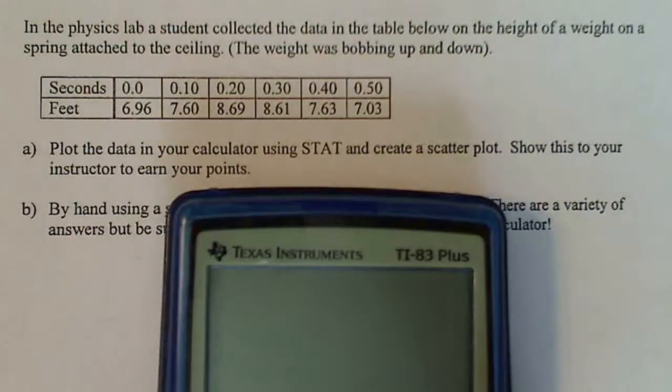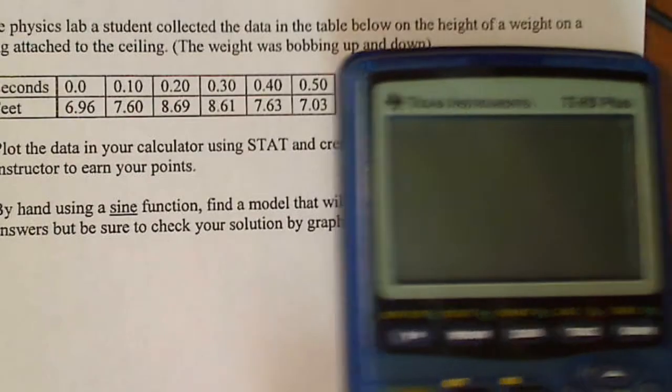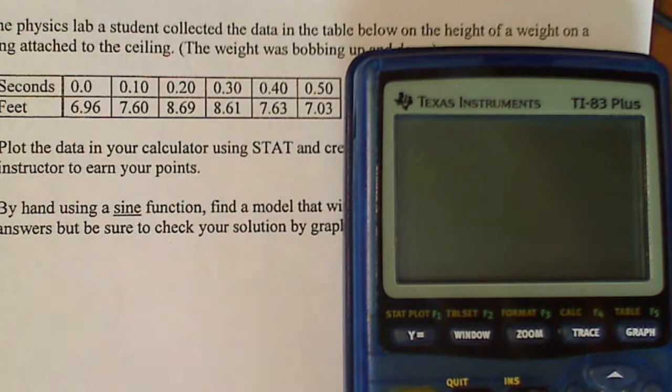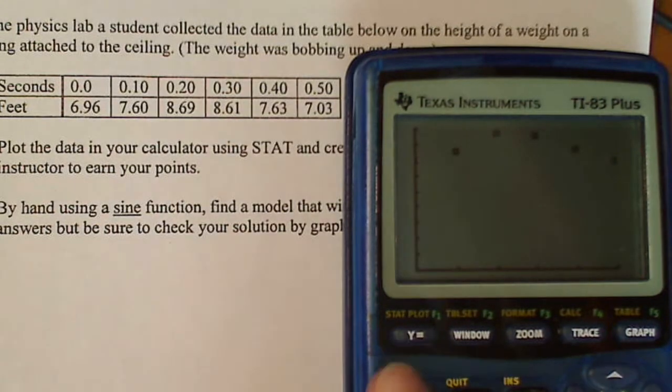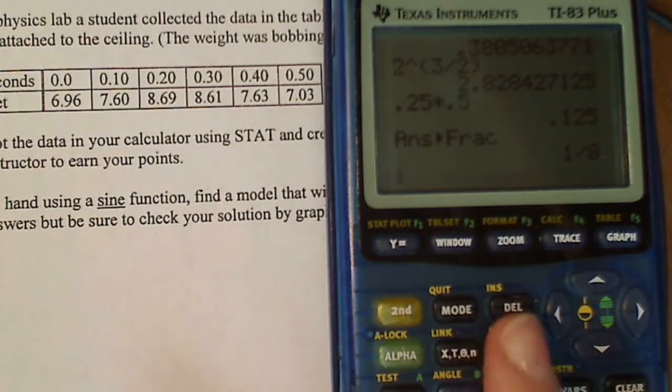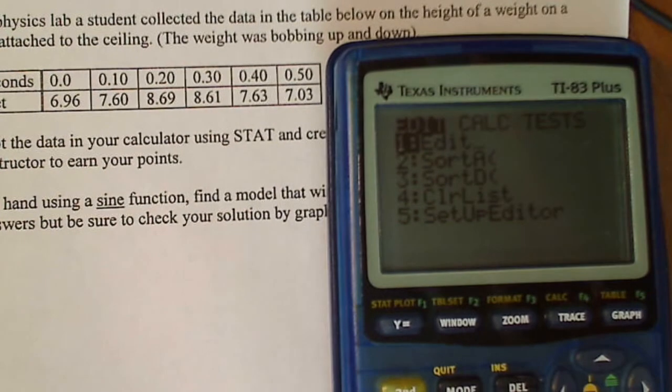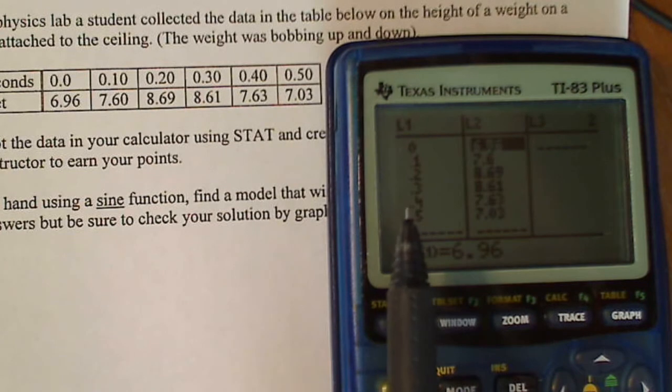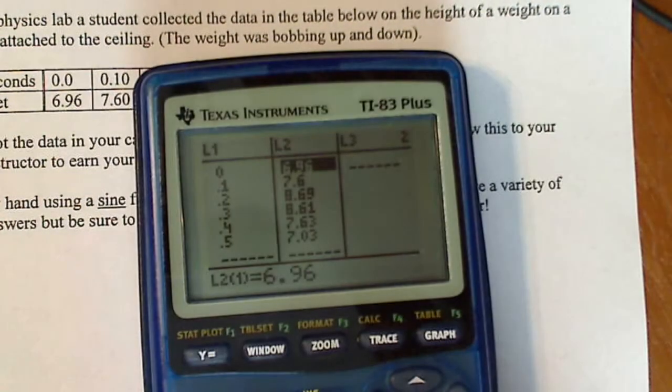But when you do your calculator, you just have to go to the stat. Let me move this so you can see both things. You go to your stat key, which is down here. You hit edit. And in list one, you put the first row. In list two, you put the second row. It doesn't look like it's focusing very well, but there it is.